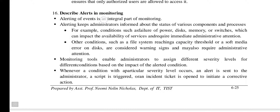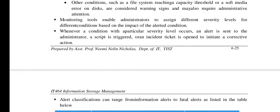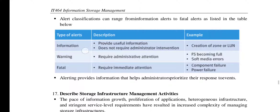Next, let's discuss alerts in monitoring. Alert messages are needed according to the severity of the risk or threat. Alerting of events is an integral part of monitoring and keeps administrators informed about the status of various components and processes. It assigns severity levels. The types of alerts are: informational alerts that provide useful information and do not require administrator intervention; warning alerts that require administrative intervention, such as a file system becoming full; and fatal errors which require immediate attention.